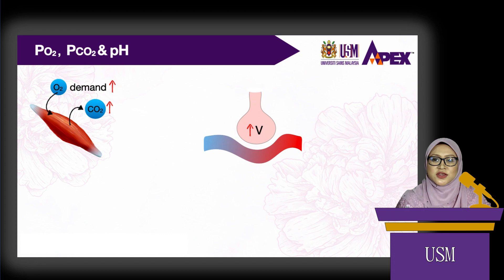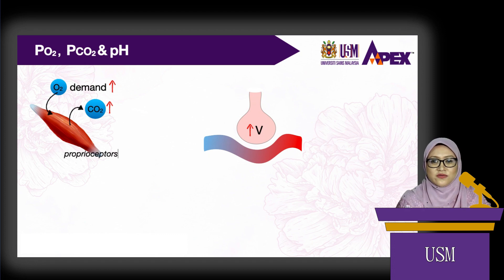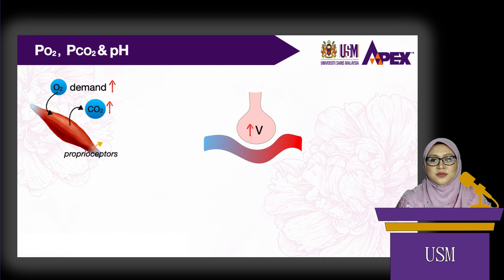The stimulus for the increased ventilation comes from the proprioceptors of the muscles and joints. These proprioceptors send information to the medullary inspiratory center, which commands to increase ventilation.